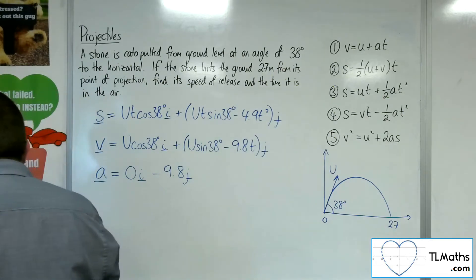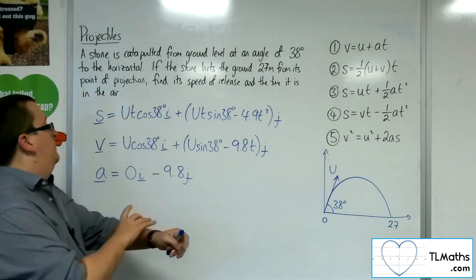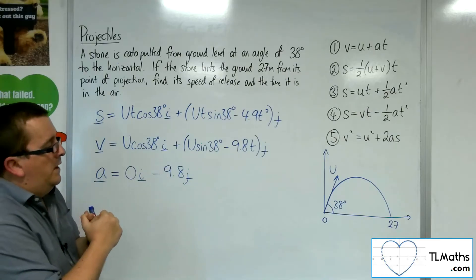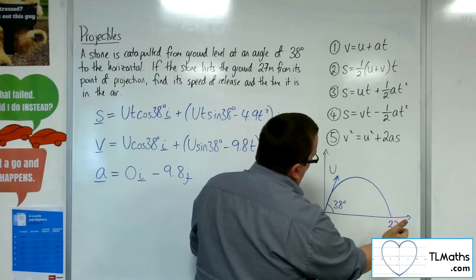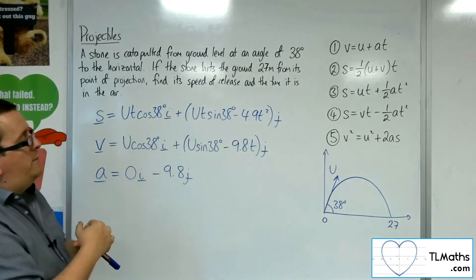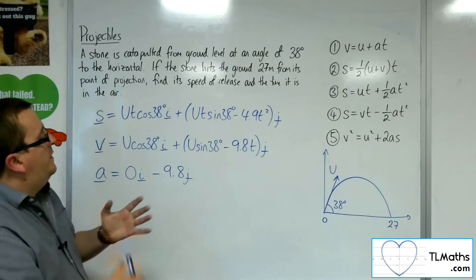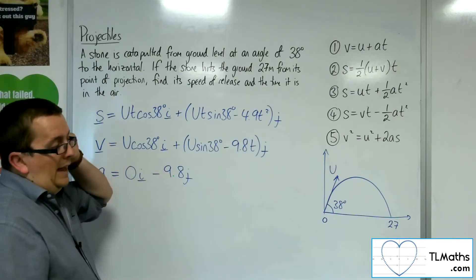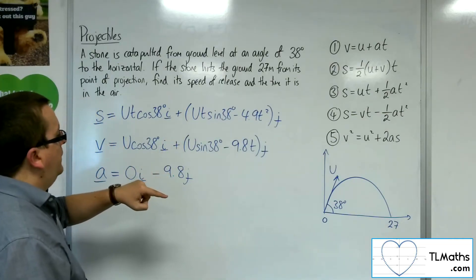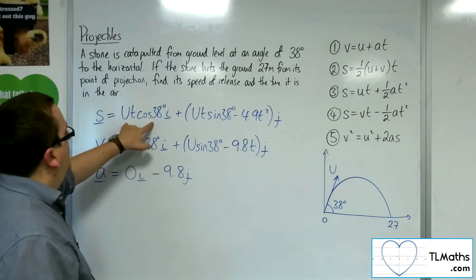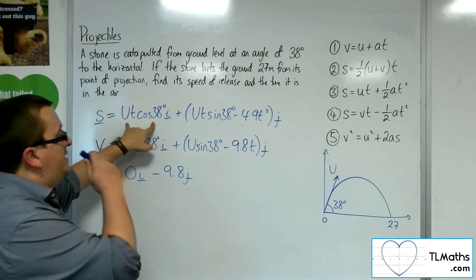So these are the equations that I need. So what can I utilise here? Well, I know that when I hit the ground, I'm 27 metres from the initial starting position. So I know that the displacement at the end when the stone hits the ground is 27. So I know that I need the ut cosine 38 to be equal to 27.